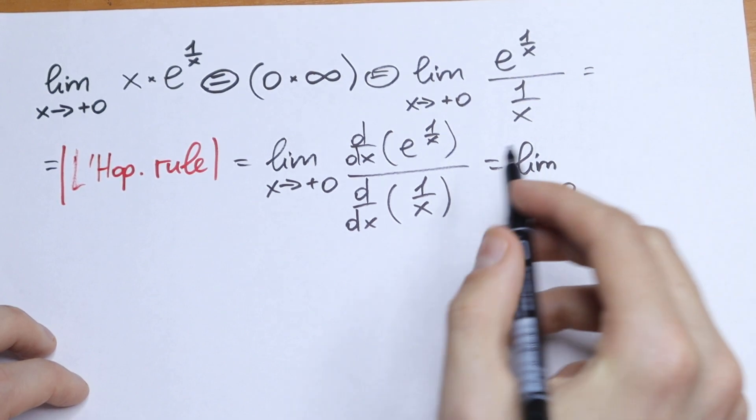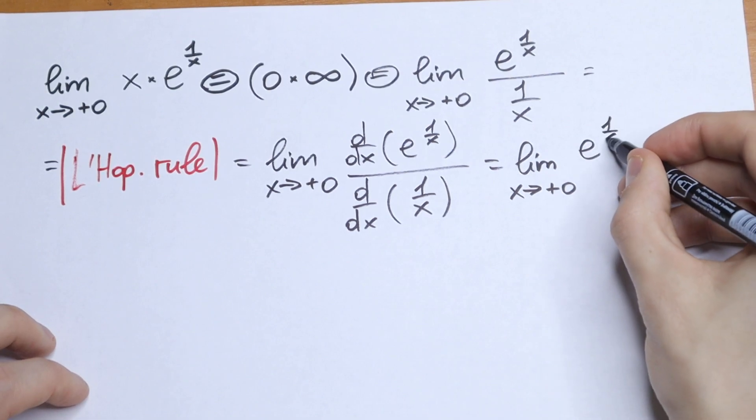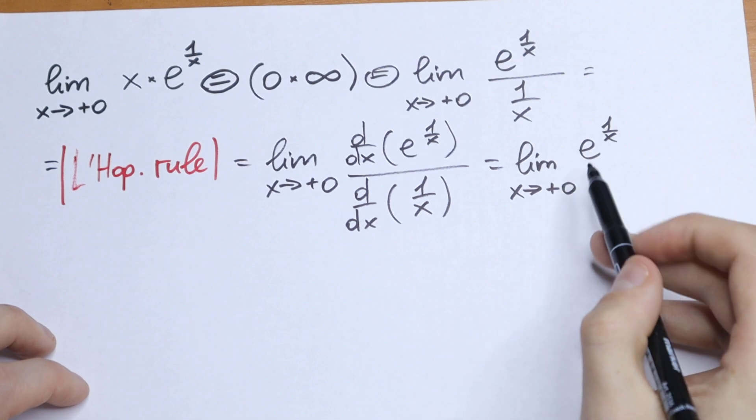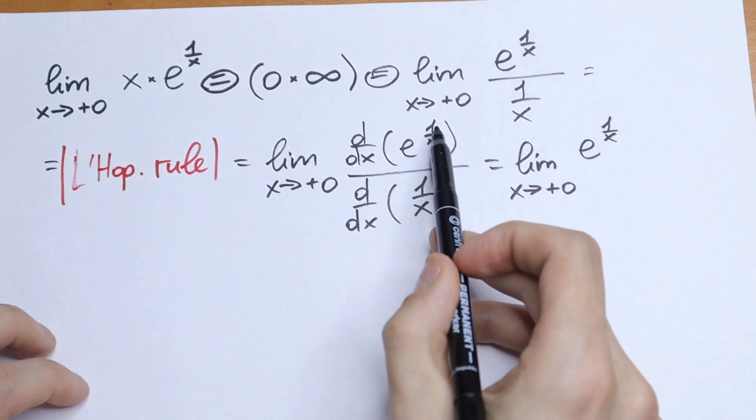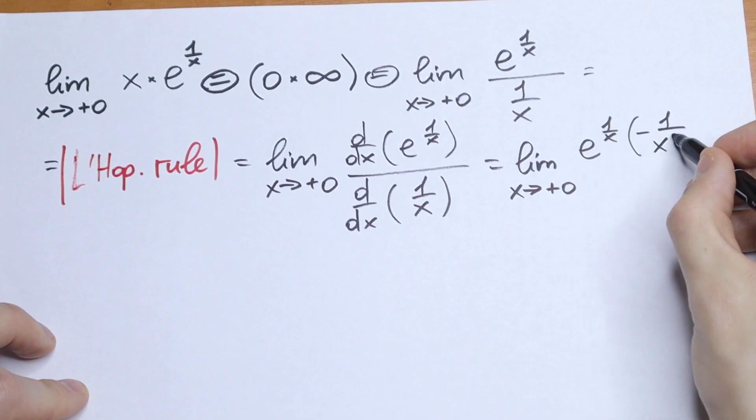But right here we have no x, we have 1 over x. So we need to write e to the power 1 over x. And because of the chain rule we need to multiply it by the derivative of 1 over x which is equal to minus 1 over x squared.